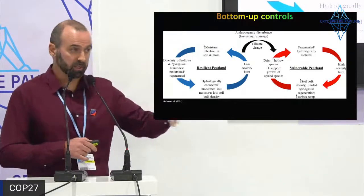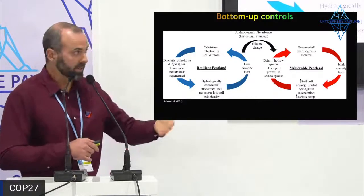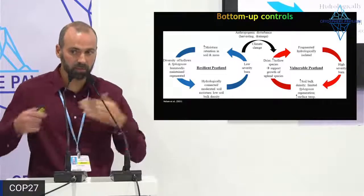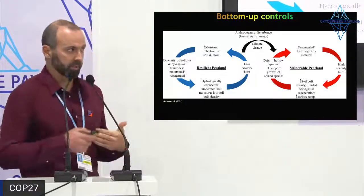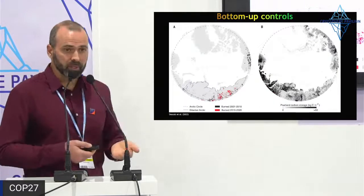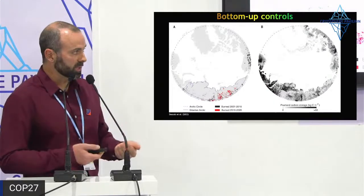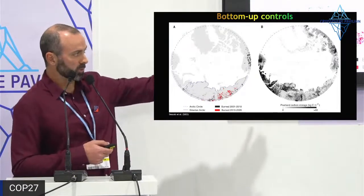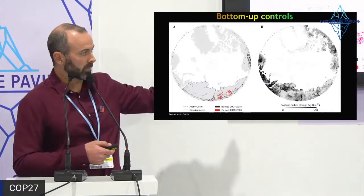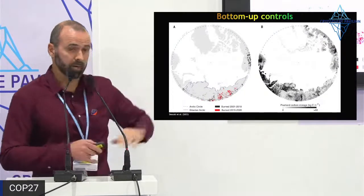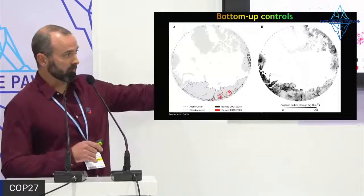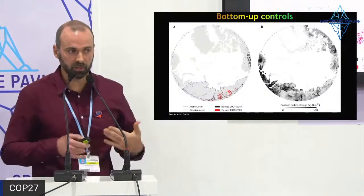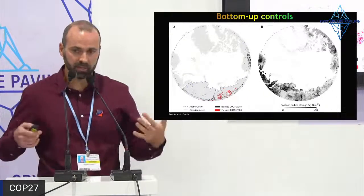Another system with potential self-reinforcing feedbacks is peatlands — there are a lot of peatlands in Canada and western Russia. The model is: when peatlands dry from drainage or climate change and then burn, the fires tend to be higher severity. It changes soil and vegetation properties, bringing in more flammable species — another potentially self-perpetuating mechanism. This is important because the massive tundra fires of 2019 and 2020 in the Siberian Arctic largely occurred in peatlands.